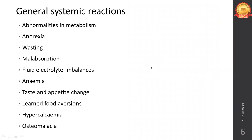General systemic reactions in cancer patients include abnormal metabolism. Once diagnosed with cancer, the first thing seen is abnormal weight loss - from mental depression, or from medications causing anorexia - leading to loss of appetite, weight loss, and muscle wasting.